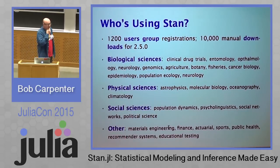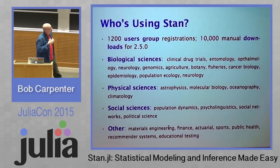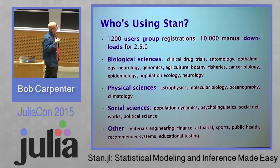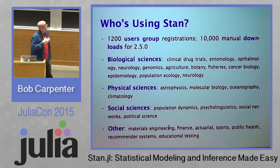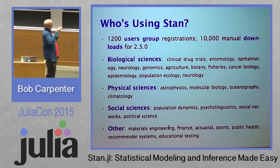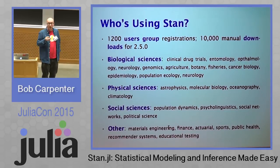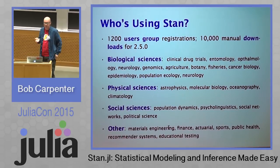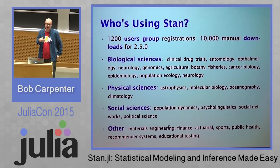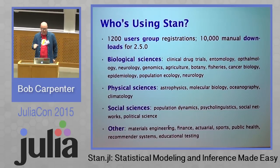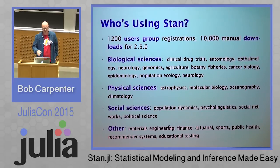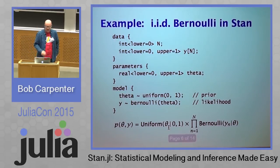Who's using Stan? Right now we have around 1,200 members on our users group and around 10,000 manual downloads for each of our releases. These are areas where people have actually published scientific papers using Stan to do their probabilistic inference — working across the biological, physical, and social sciences, as well as engineering, finance, actuarial work, sports, and public health.